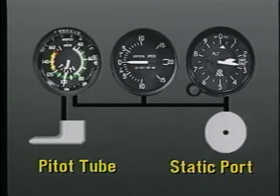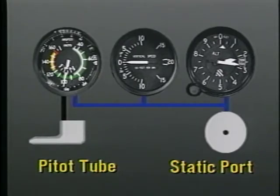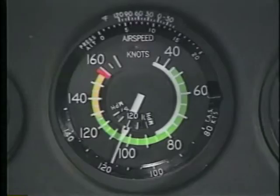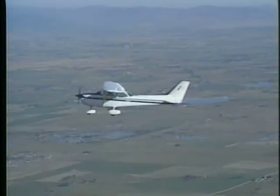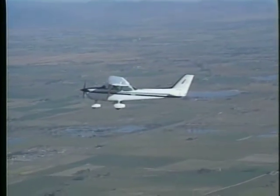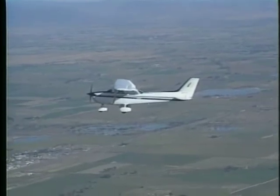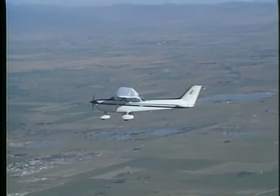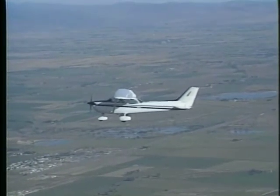While all three instruments use the ambient air pressure provided by the static port, only the airspeed indicator uses ram air pressure from the pitot tube. The airspeed indicator displays the speed of your airplane through the air by measuring the difference between the ram air pressure entering the pitot tube and the ambient air pressure that enters the static port.